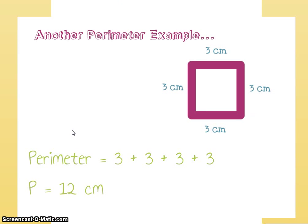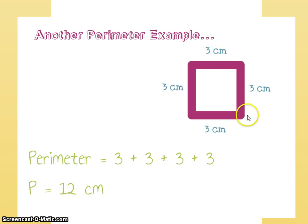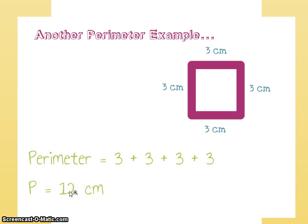Here's another perimeter example. This happens to be more of a square — it's the same size on all four sides. So again, all I do is add them up: three plus three plus three plus three, and I end up with 12 centimeters. That's the distance all the way around this square.